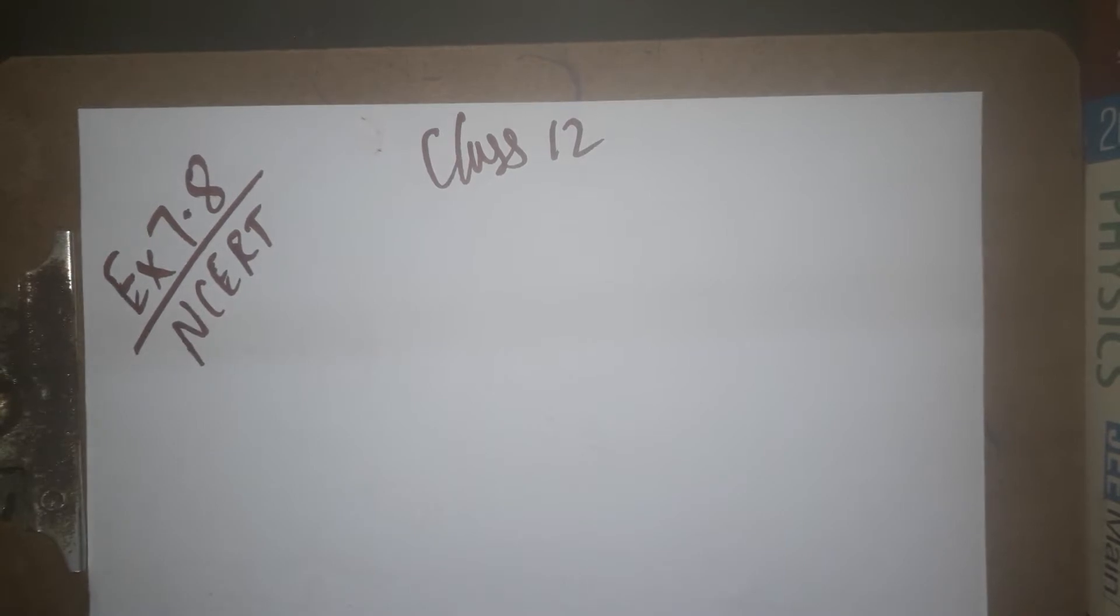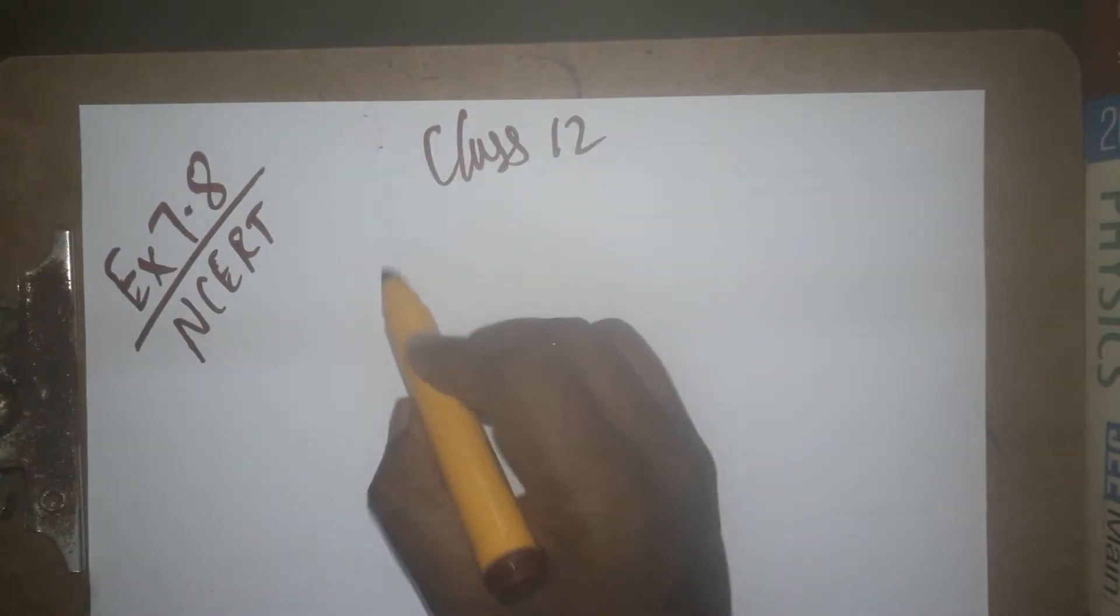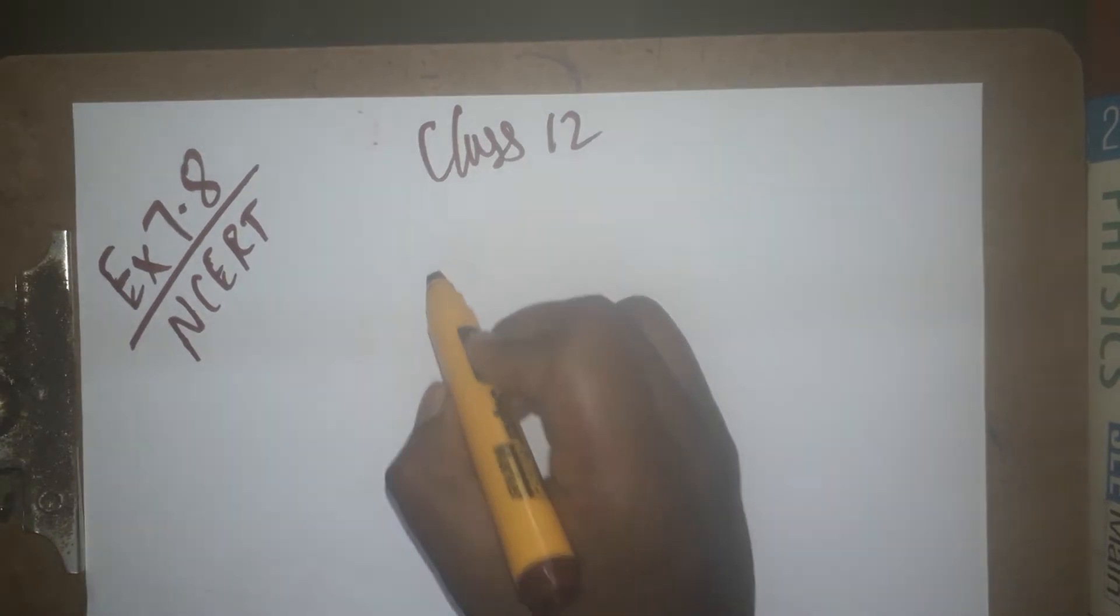I have given all the problems, examples as well as exercises. Now we are doing exercise problem 8, which is from chapter 7 on alternating current. The question asks: what is the energy stored in the capacitor?